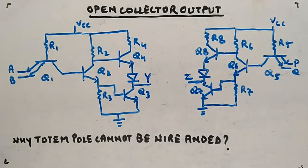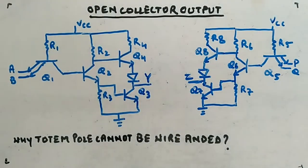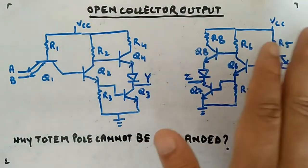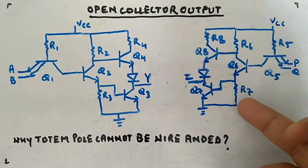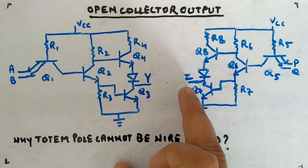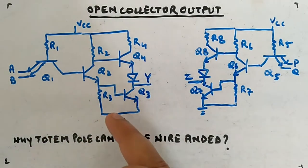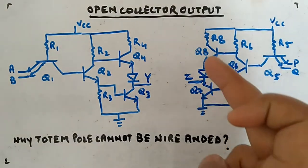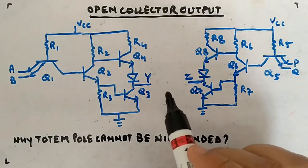Let's look at why the totem pole output configuration will not work for wire-ANDing. Here you can see I have taken one totem pole circuit and another totem pole circuit — similar circuits. I have not marked the values of resistance, but this is 4k, 4k, 1.4k, 1k, and similarly here also 4k, 4k, 1.4k, 1k. The output is Z, input is PQ here; input is AB, output is Y, with transistors Q1 through Q8.